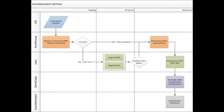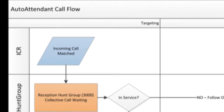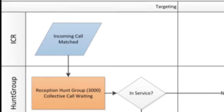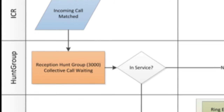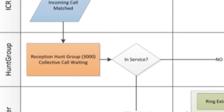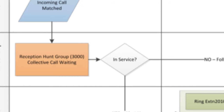First, let's take a look at how the actual call flow works to get an idea of the programming we'll need. First, we start off with an incoming call route. Once that call route is matched, we route it to the destination. Here, it's going to be a hunt group.